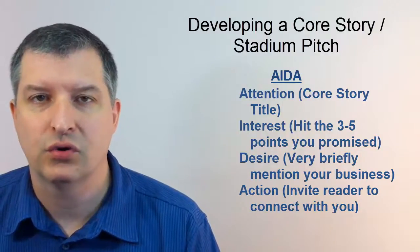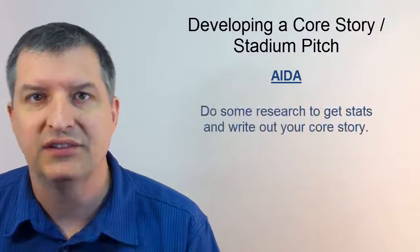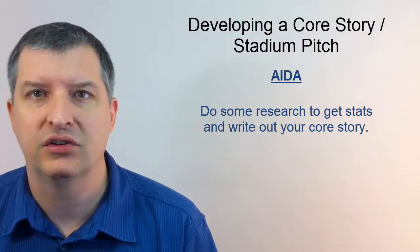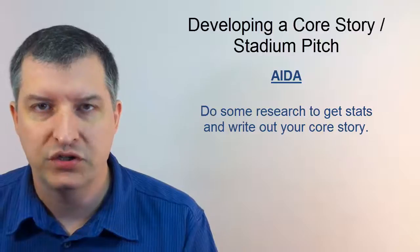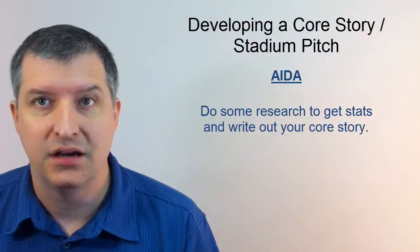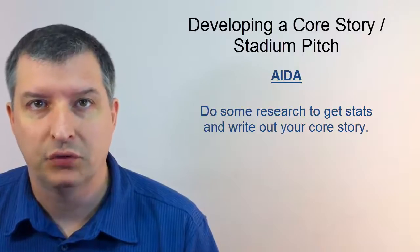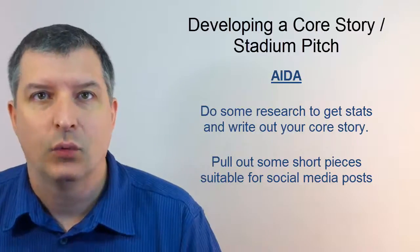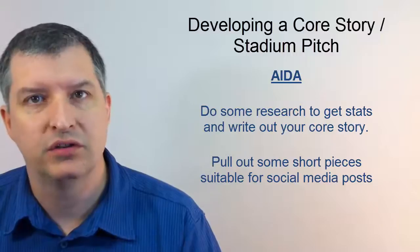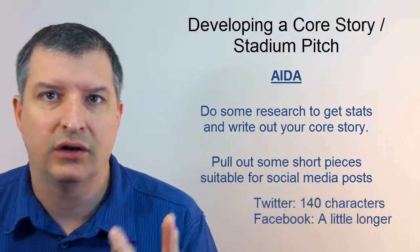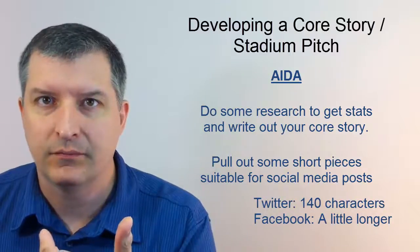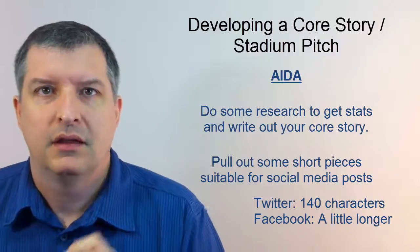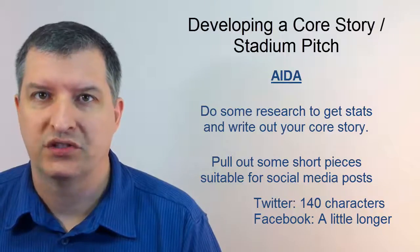Putting together an effective core story can take some time, but don't get stalled on this step. Stop now and do some research — put together a compelling story for your ideal market and write it out. That may take a day or two. Since we're also going to be using social media heavily in this course, which favors short pieces, take some key pieces out of your core story once it's completed and prepare short messages you can put on Twitter — Twitter's 140 character limit — and on Facebook, where you can have longer posts but still want to keep it short. We'll use your entire core story on your web presence, which is coming up next.